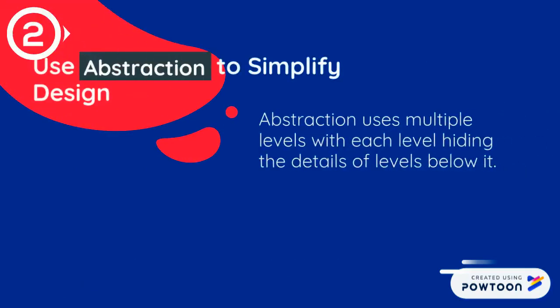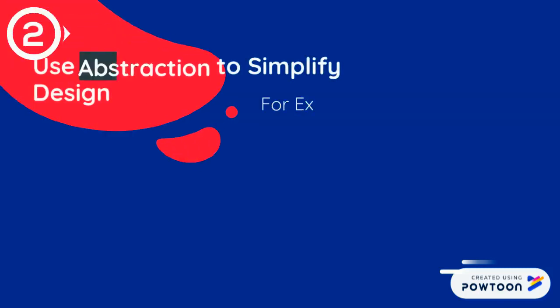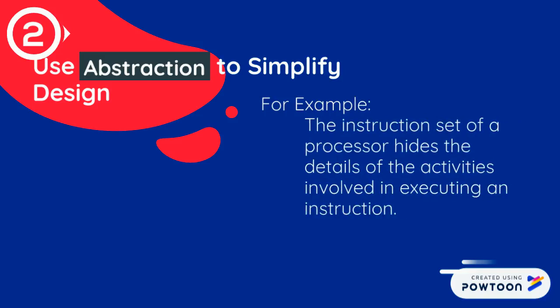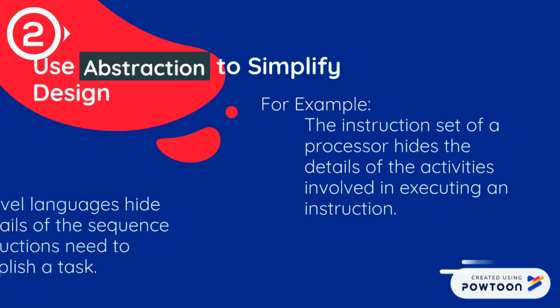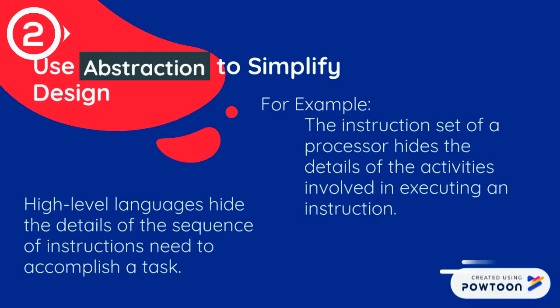Use Abstraction to Simplify Design. Abstraction uses multiple levels, with each level hiding the details of levels below. For example, the instruction set of a processor hides the details of the activities involved in executing an instruction. High-level languages hide the details of the sequence of instructions needed to accomplish a task.